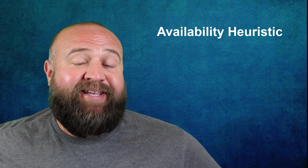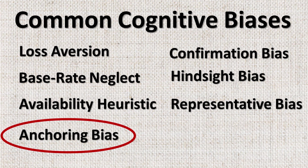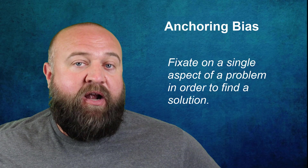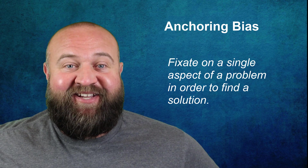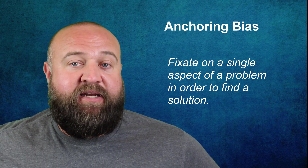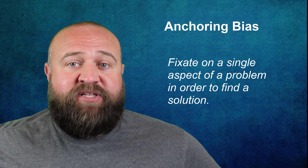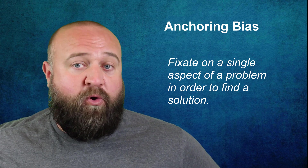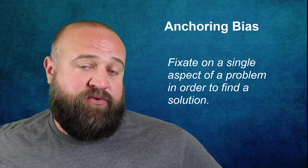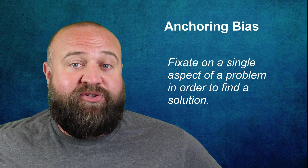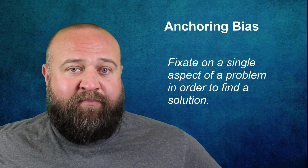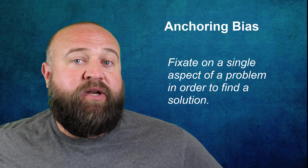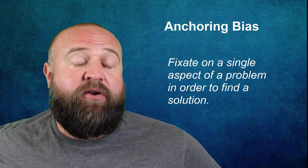The next bias is anchoring bias. Anchoring bias is a faulty heuristic in which you fixate on a single aspect of a problem in order to find a solution. As a college professor, I see anchoring bias come up quite a bit with my students. For example, when I assign a research paper, I'll have many students who immediately just look at websites like Wikipedia and overly rely on them to the exclusion of any other source of information. I've even had students Google things I've talked about in class and then tell me whether or not Google agrees with what I'm saying. This is an over-reliance on just one source of information and is a great example of anchoring bias in action.